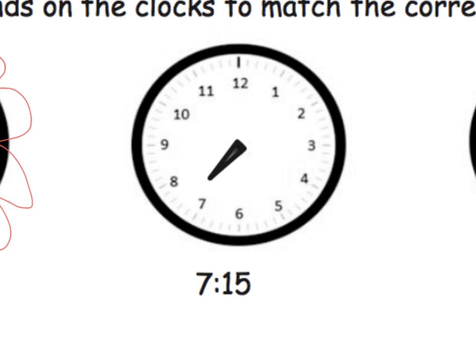If we want to do 7:15, it's the same concept — we're going to start at that 12 and count by fives: 5, 10, 15 — and so there's our 15, so we know our minute hand is going to go straight to the 3.